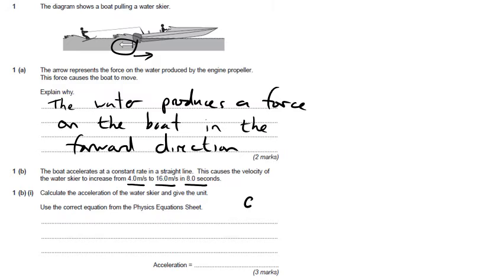So the formula we're going to use is that acceleration is change in velocity divided by time taken. In this case, the change in velocity is the final velocity, 16, minus the initial, which is 4, all divided by 8. 16 minus 4 is 12, so 12 divided by 8 gives us 1.5, and the unit of acceleration is metres per second squared.